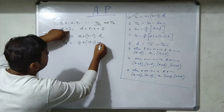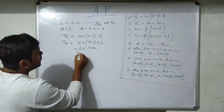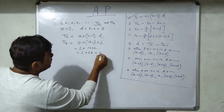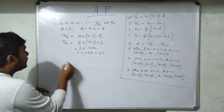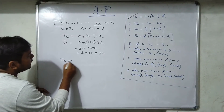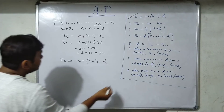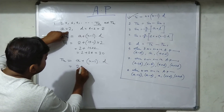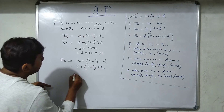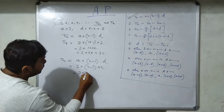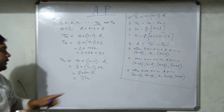T15 = 2 + (15 - 1) × 2 = 2 + 14 × 2 = 2 + 28 = 30. For Tₙ, using the formula: Tₙ = A + (N - 1) × D = 2 + (N - 1) × 2 = 2 + 2N - 2 = 2N.